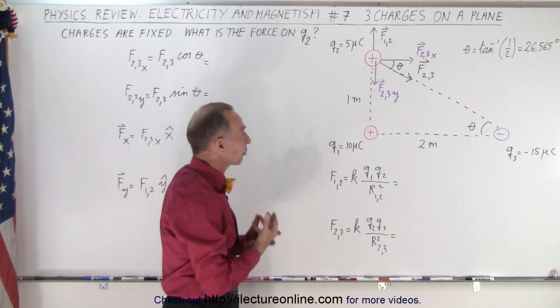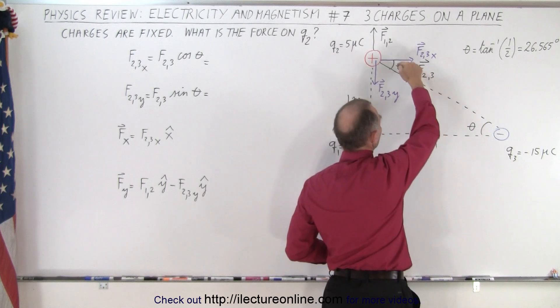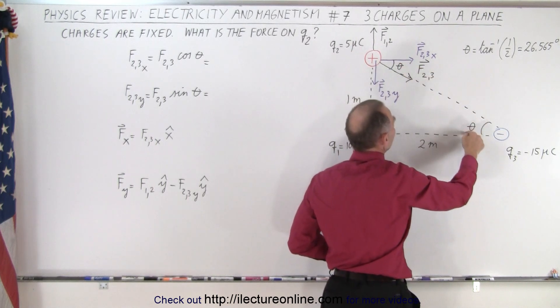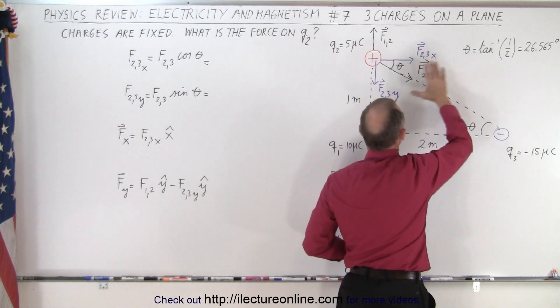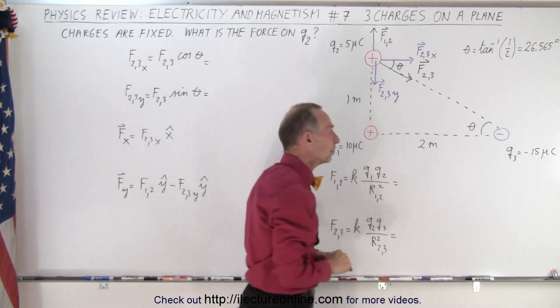And to find the X and Y components, we need to find the angle, so this angle here must be the same as this angle, those are alternate interior angles, and so therefore we use the inverse tangent of the opposite side to the adjacent side to find the size of that angle.